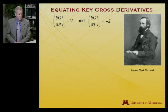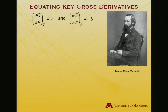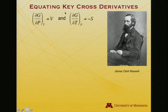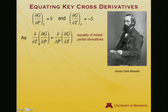And so here is our friend James Clerk Maxwell again. This slide looks very similar to that for the Helmholtz free energy — the difference is really only in the letters appearing in our equations. We want to equate cross derivatives, so here are our initial derivatives; we now differentiate again with respect to the other variable and set the two equal to one another.